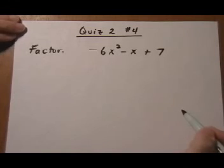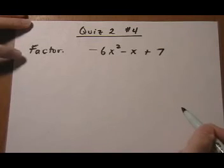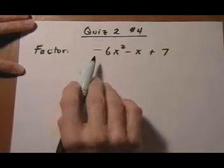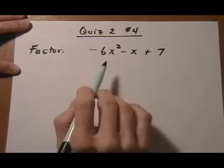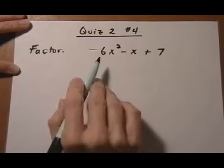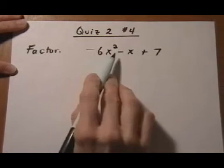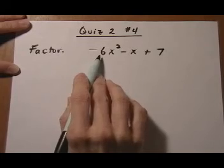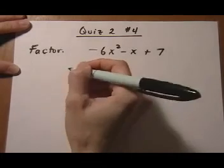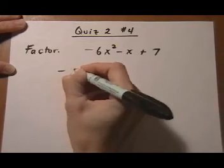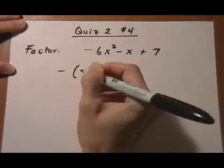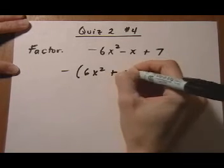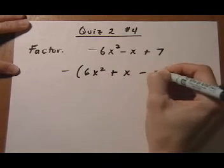Quiz 2, number 4. Here we have a factoring problem and we have a trinomial. First thing we're going to try is GCF. The trinomial factoring will be much easier if we take out a greatest common factor of negative 1, so that the front term will have a positive coefficient. So we take out a minus and we're left with 6x squared — and that changes every sign — plus x minus 7.